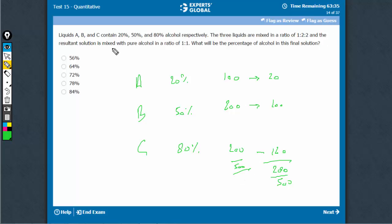And then, resultant solution is mixed with pure alcohol in ratio 1 to 1. So, 280 out of 500 is 56%. 56% is being mixed with 100% in the same quantity. So, the resultant thing would be exactly half of this: 56 plus 100 upon 2, 156 upon 2, that is 78%.